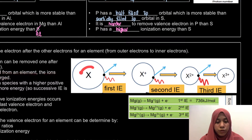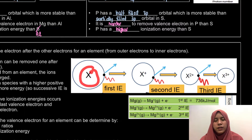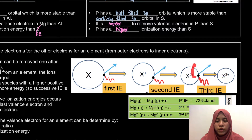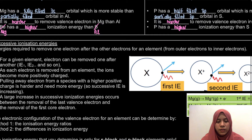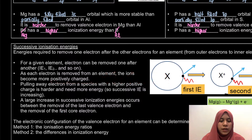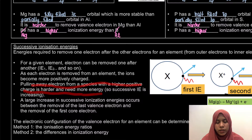First it is a neutral atom. Remember that ionization energy is the energy required to remove one mole of electrons from one mole of gaseous atoms or ions. Once we remove one electron, it becomes X+. Remove one more, it becomes X2+. Remove another, X3+, then X4+. Pulling away an electron from a species with a higher positive charge is harder and needs more energy. That's why successive ionization energy is increasing.